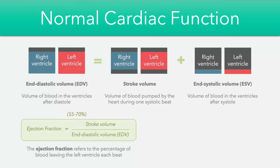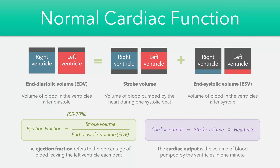The stroke volume can also be multiplied by the heart rate to work out the cardiac output, which gives a representation of the volume of blood pumped by the ventricles in one minute. The value for this is usually around 4–8 litres per minute at rest, but it can increase during activity.